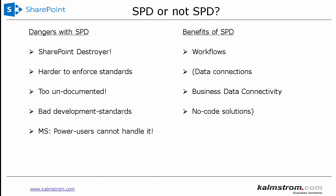Data connections is a really powerful feature, especially if you're on-premise with your own SharePoint server — you can set up data connections very easily. Business Data Connectivity also lets you connect to data sources, which is really powerful on-premise. If you're on Office 365, you can only connect to OData sources, which is still powerful but a bit more limited. And there are a lot of no-code solutions that build on top of SharePoint Designer.